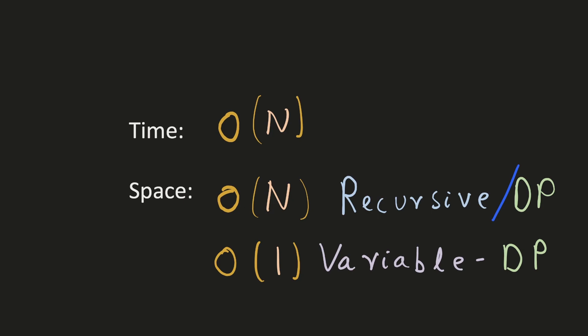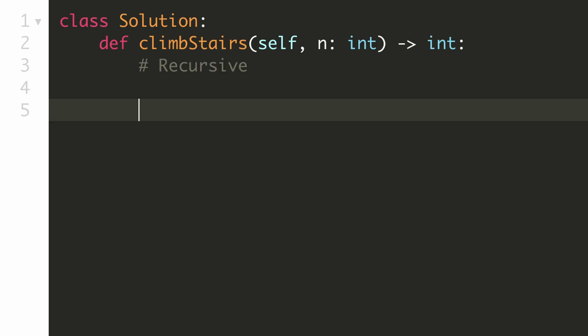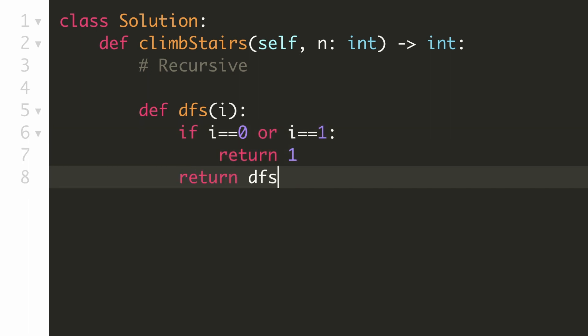Let's implement all these three solutions. For the recursive solution, we'll define our DFS function which takes the position as an input parameter. Now we'll write a base condition, if the position is 0 or 1, then we have only one way to reach it. Otherwise, our result will be the sum of the results of the two previous positions. So we'll call DFS on these two positions, add them and then return the result.